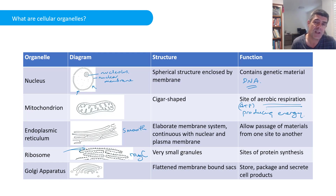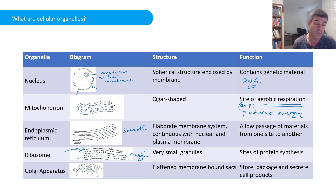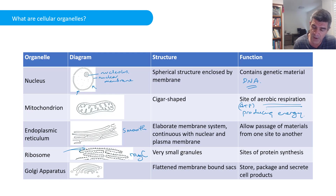Ribosomes are a common structure seen in a large number of different cell types, both prokaryotic and eukaryotic. There is no membrane for the ribosome — they are just small granules — but they are the site of protein synthesis.